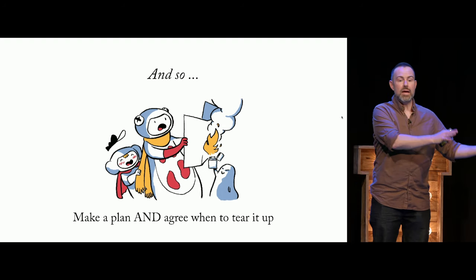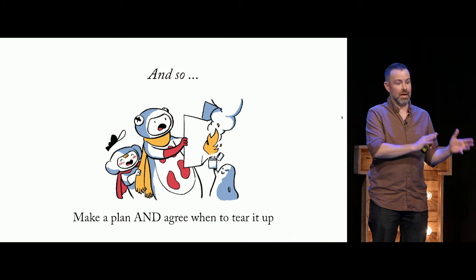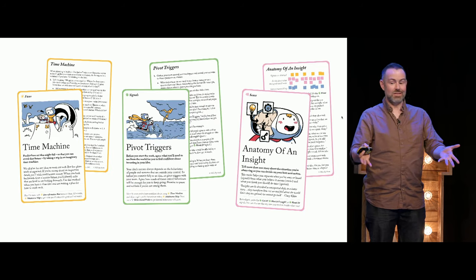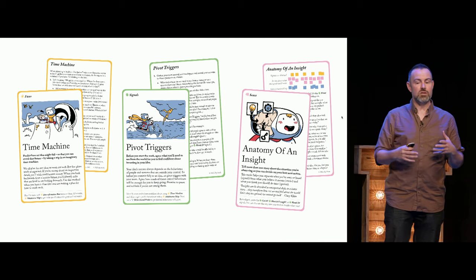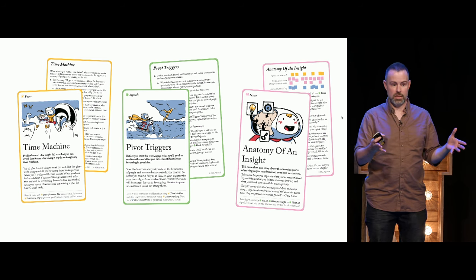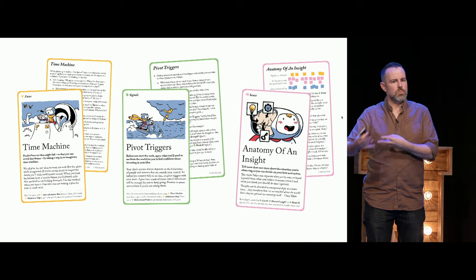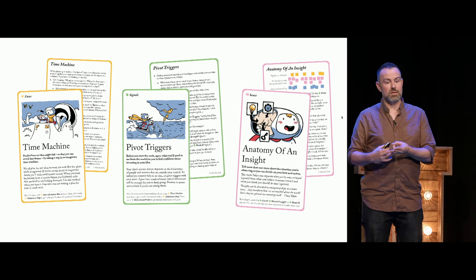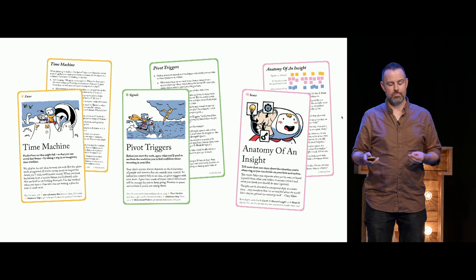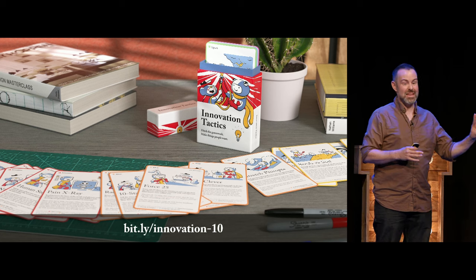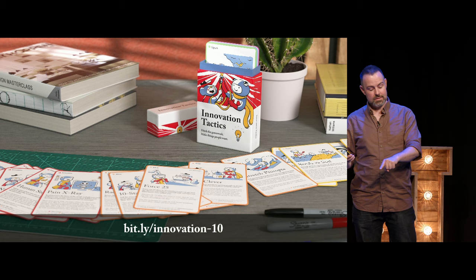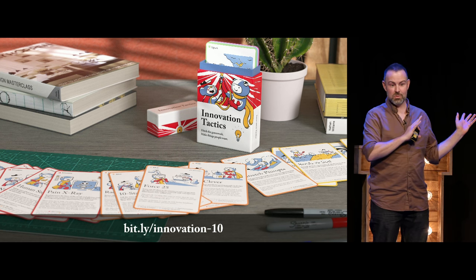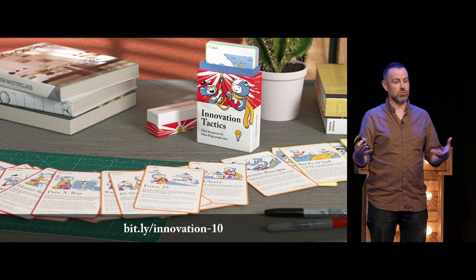Overall: make a plan, but try not to over-plan. Make a plan and agree when you're going to tear it up. Use the Time Machine to agree where the most important places to adapt are. Use Pivot Triggers to set when you'll do probes and check if you're right to be afraid. Use Anatomy of an Insight to figure out how you should adapt when you get there. These are just three out of 54 cards in the Innovation Tactics deck — there's a discount link on screen.